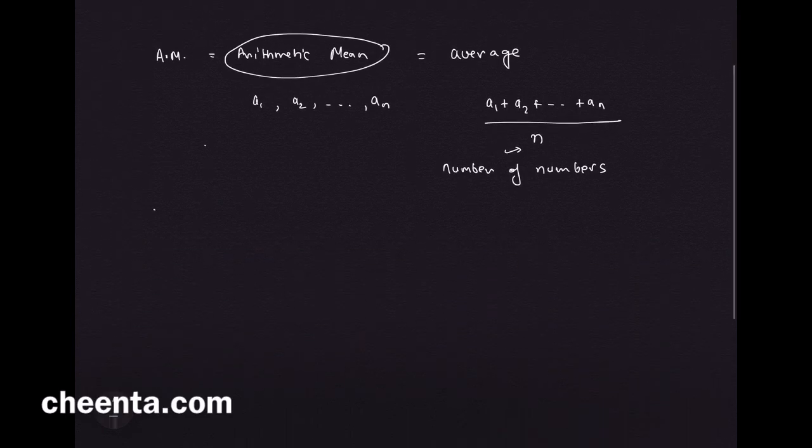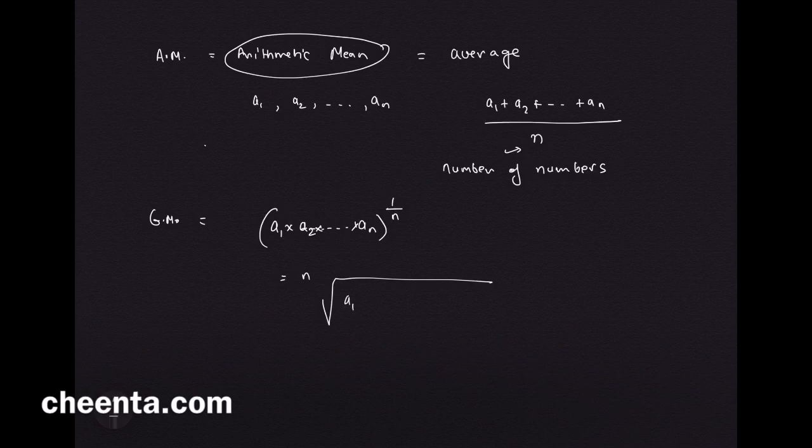Now let's look at the geometric mean. This time you take the product of all the numbers a₁ times a₂ up to aₙ and raise it to the power 1 over n. This is simply the nth root of the product of all the numbers.